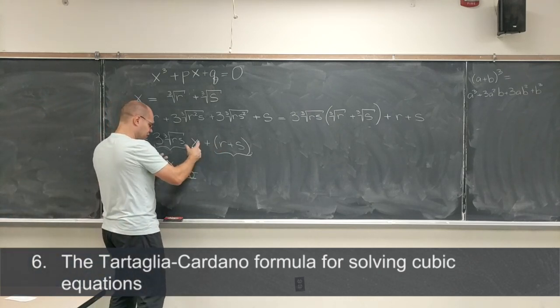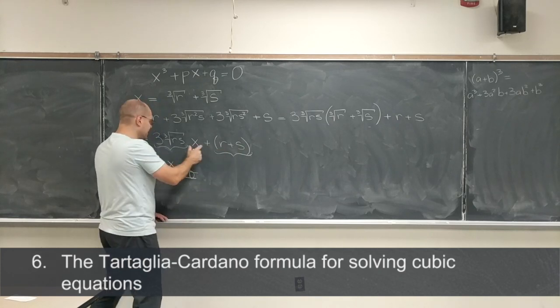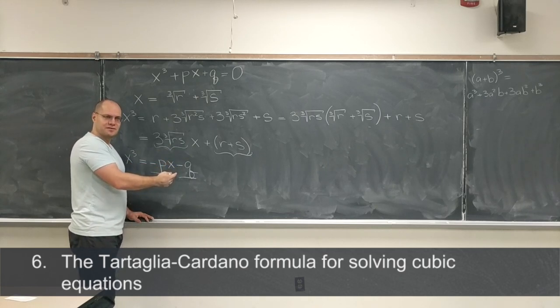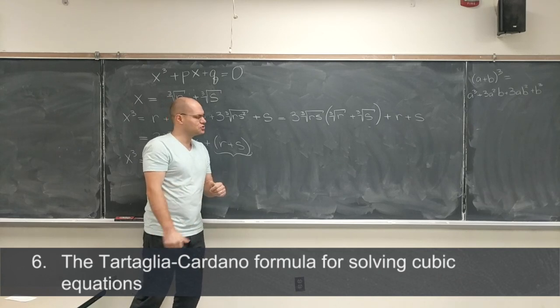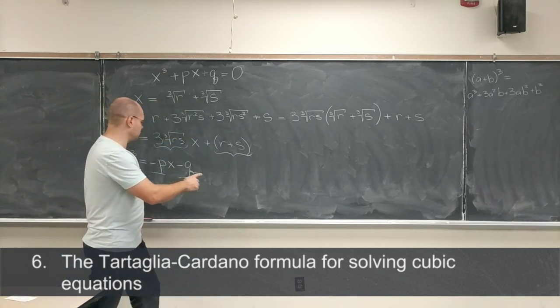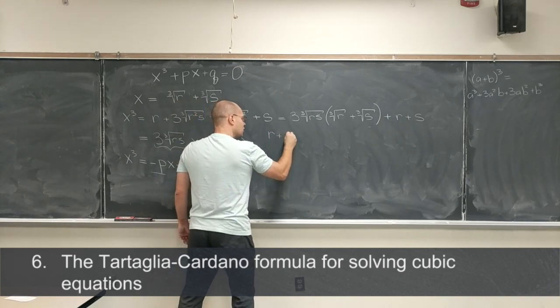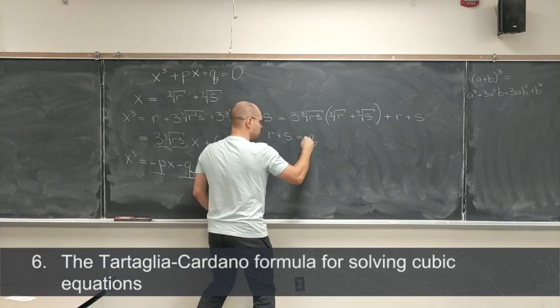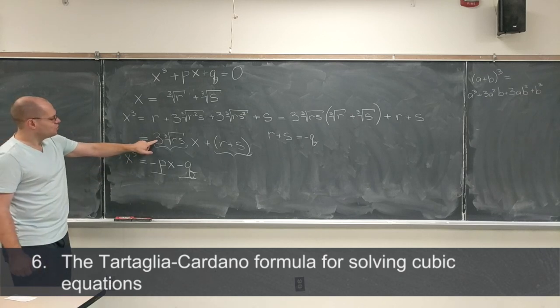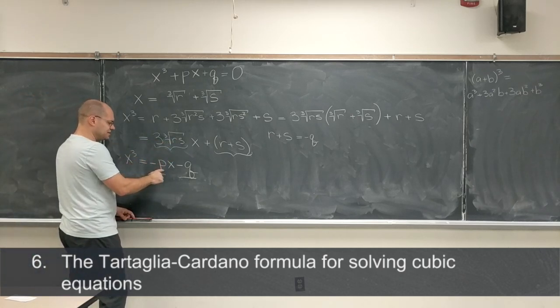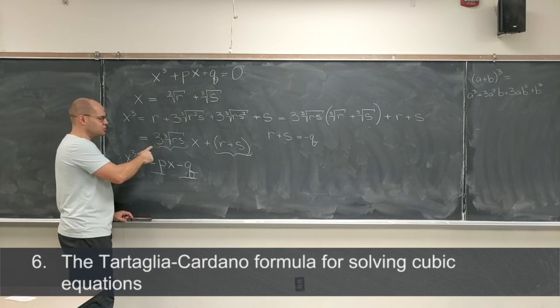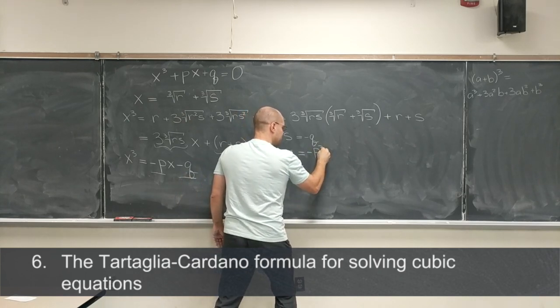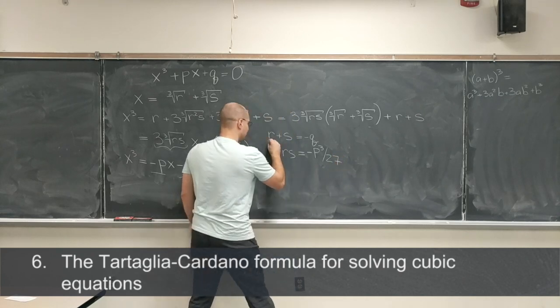But this is almost solving the problem, because look, from this we know the sum of 2 numbers, and we know their product. And when you know the sum and the product of 2 numbers, then you know that there's the solution of the quadratic equation. So we'll just have to solve the quadratic equation. So here's what we know, we know that r plus s equals minus q. It's not that we know that, but we're going to choose r and s such that r plus s equals minus q. And, well, I'm just going to find r s, and r s equals minus p divided by 3 cubed, so it's minus p cubed. So r s equals minus p cubed over 27.